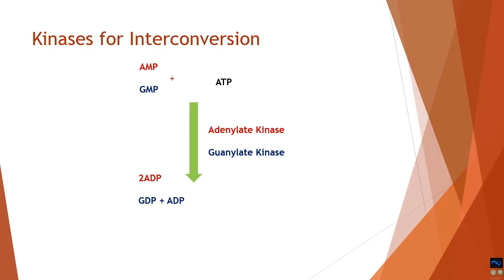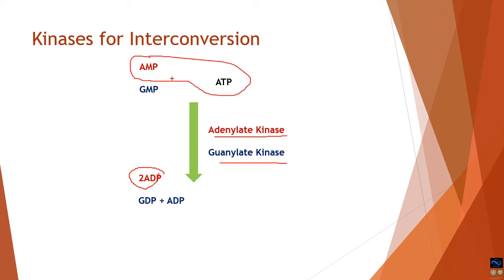This panel shows the same kinase interconversion from a different perspective. Adenylate kinase synthesizes two ADPs from AMP and ATP. Similarly, guanylate kinase synthesizes GDP and ADP from GMP and ATP. Both of these kinases are dependent on ATP for their conversion reactions.